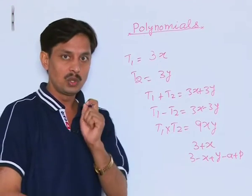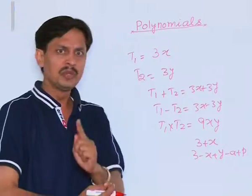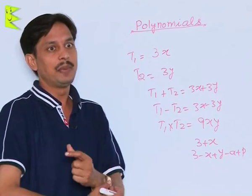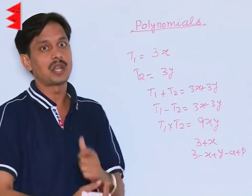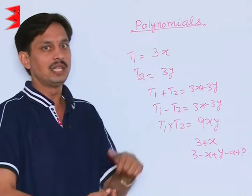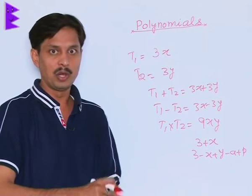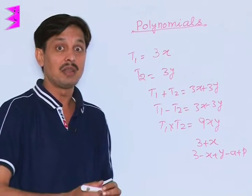If there is a single term we call it monomial. If there are two terms, the algebraic expression is known as binomial. If there are three terms, it is trinomial. If it is more than three terms, we call it multinomial, not polynomial, because polynomial comes in a special variety of the algebraic expression.